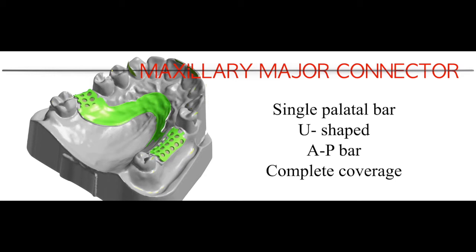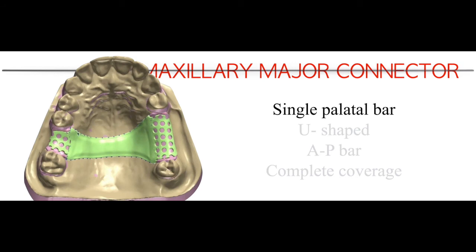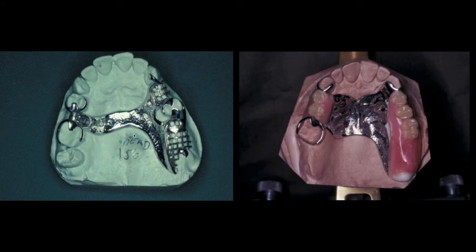For the major connector, the maxillary major connector is different from the mandibular. In the maxillary, there are four types you may choose. The first is the single palatal bar. When you have few teeth missing, meaning the majority of teeth are still remaining, the expected bite force on the prosthesis is not too much and you do not need to cover a large surface. When only one or two teeth are missing, we choose the single palatal bar, making sure it extends to cover all the teeth being replaced.